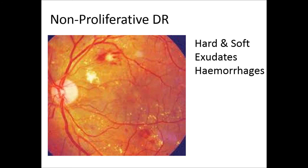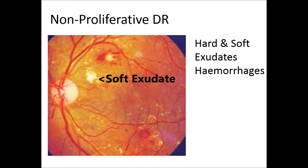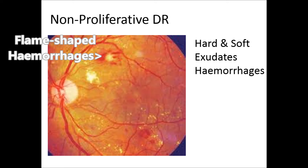Some abnormal fundi. Non-proliferative diabetic retinopathy: there are hard and soft exudates. Hard exudates are yellowish, discreet, well-defined, numerous and are in clumps. Soft exudates are whitish with fuzzy outlines, large, few in number and appear in isolation. Hemorrhages are described as dot, blot or flame-shaped hemorrhages.